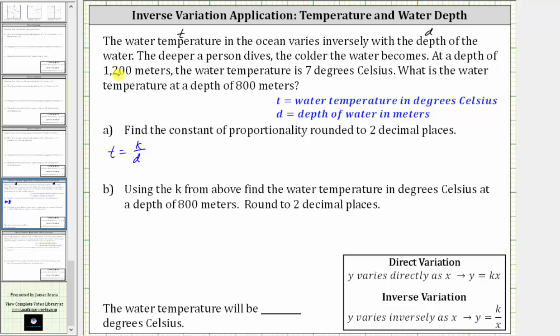And then we're told that at a depth of 1,200 meters, the water temperature is seven degrees Celsius. So we know that when D is equal to 1,200 meters, T, the temperature, is seven degrees Celsius.